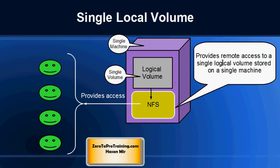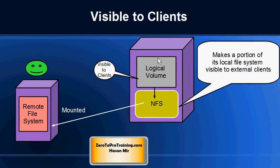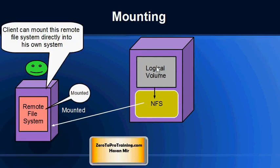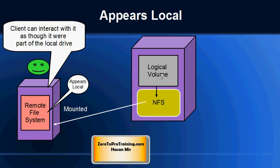Network file system provides remote access to a single volume stored on a single machine, and access is provided to clients who can access the file system over the network. The network file system makes a portion of the local file system visible to external clients. In this example, this machine is a server and this is one of the clients. The client can mount this remote file system directly into their own machine. This way, the client can interact with the file system as if it were part of its local file system. In other words, this file system residing on a server will appear local to the client.